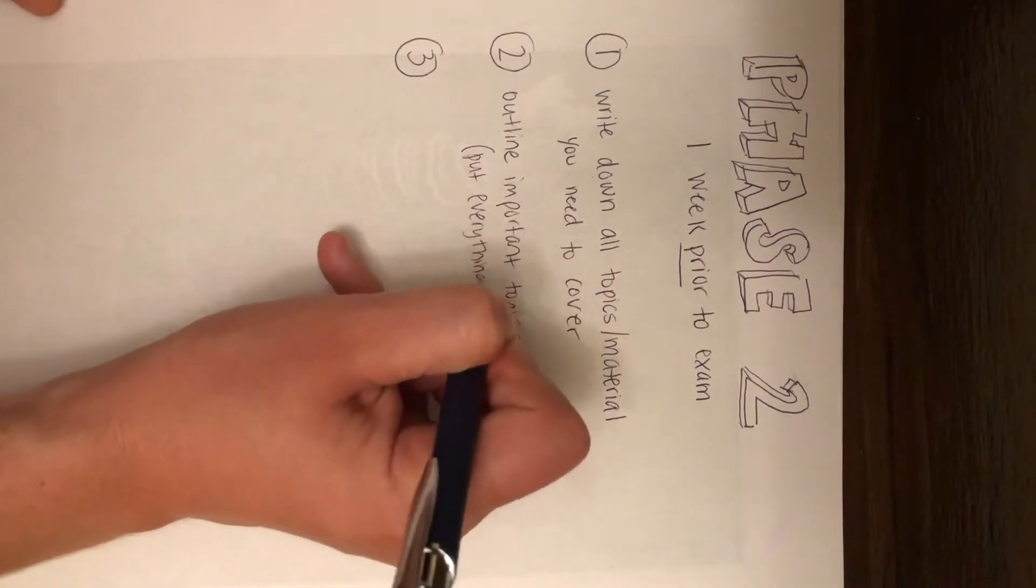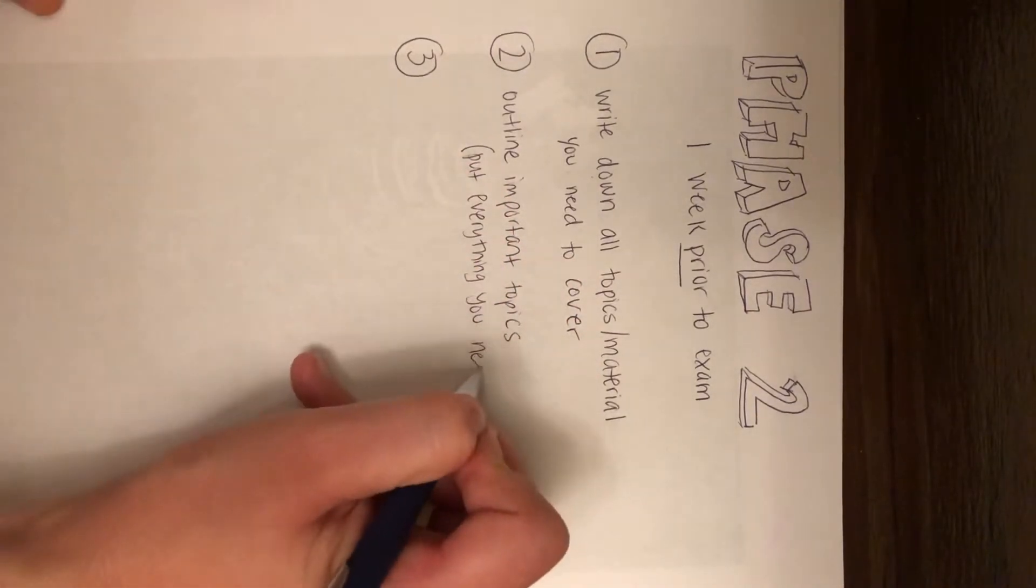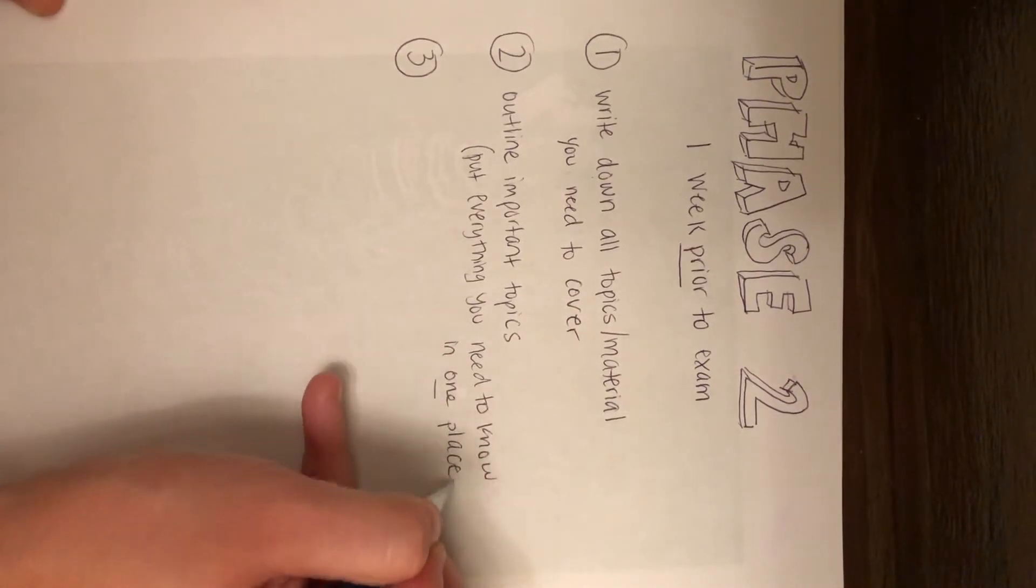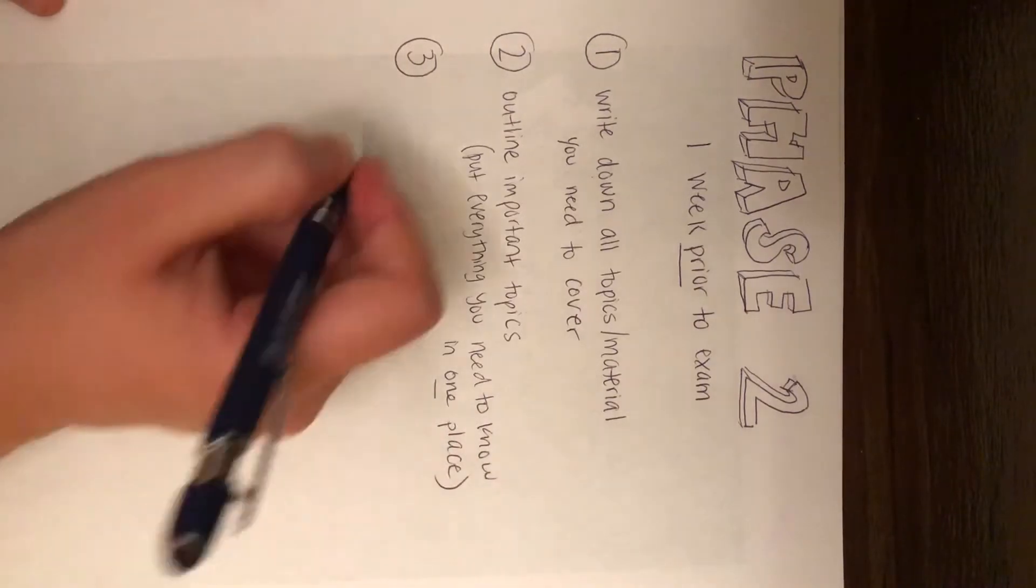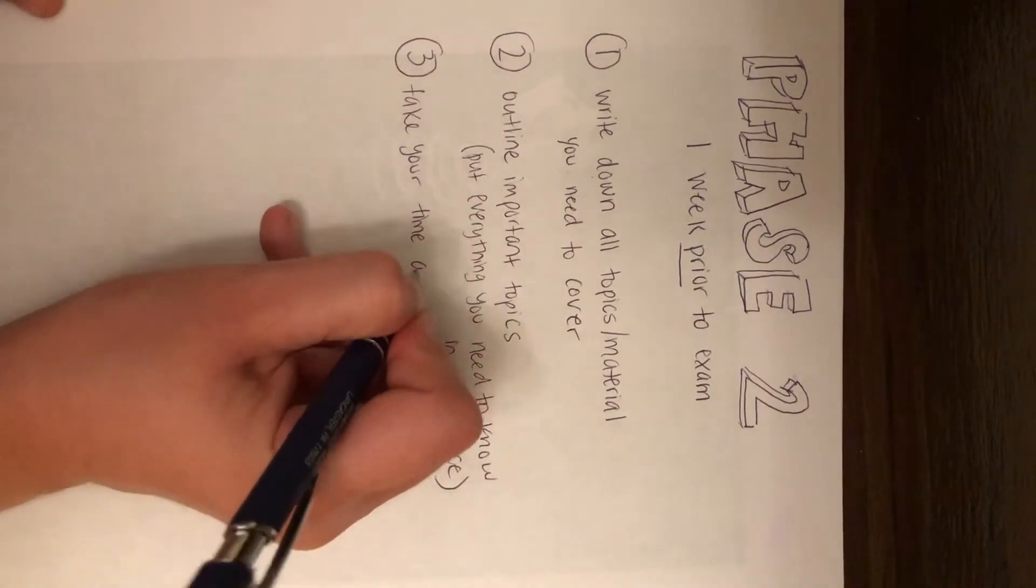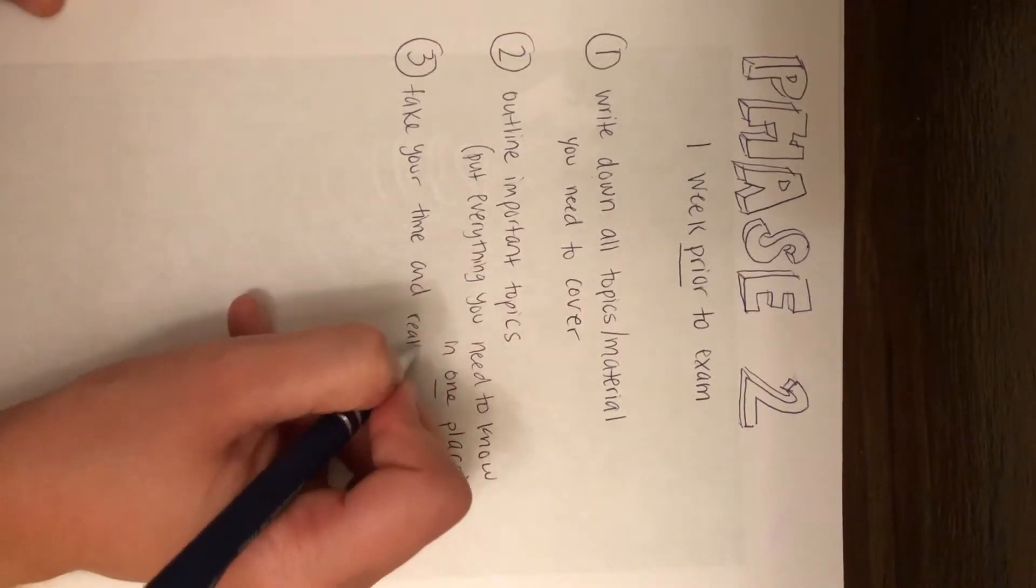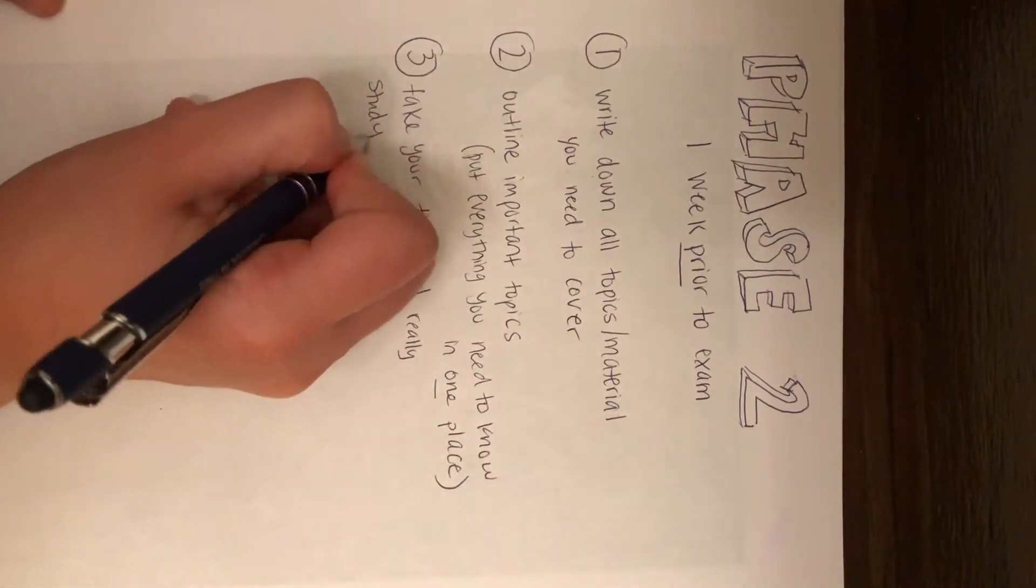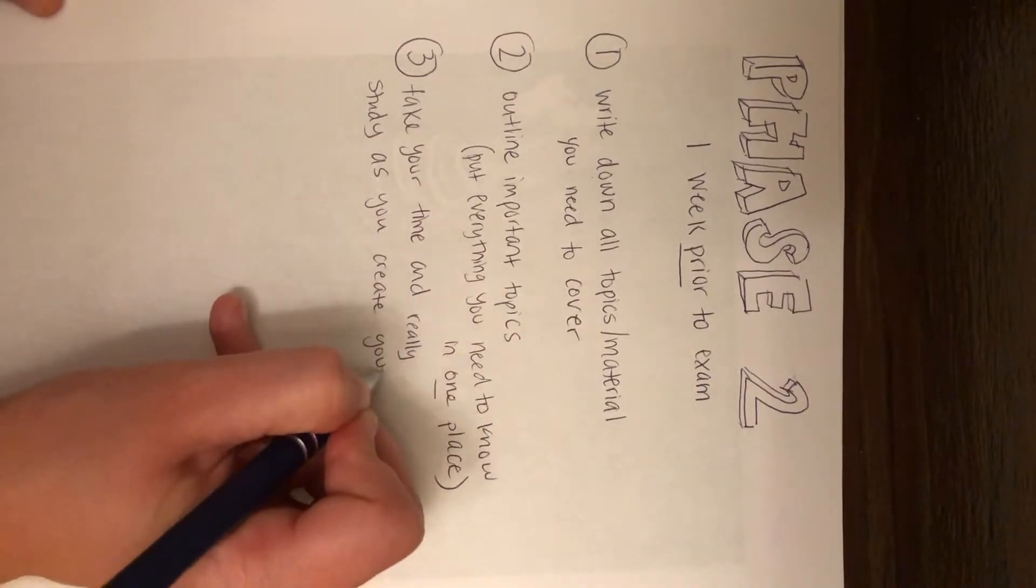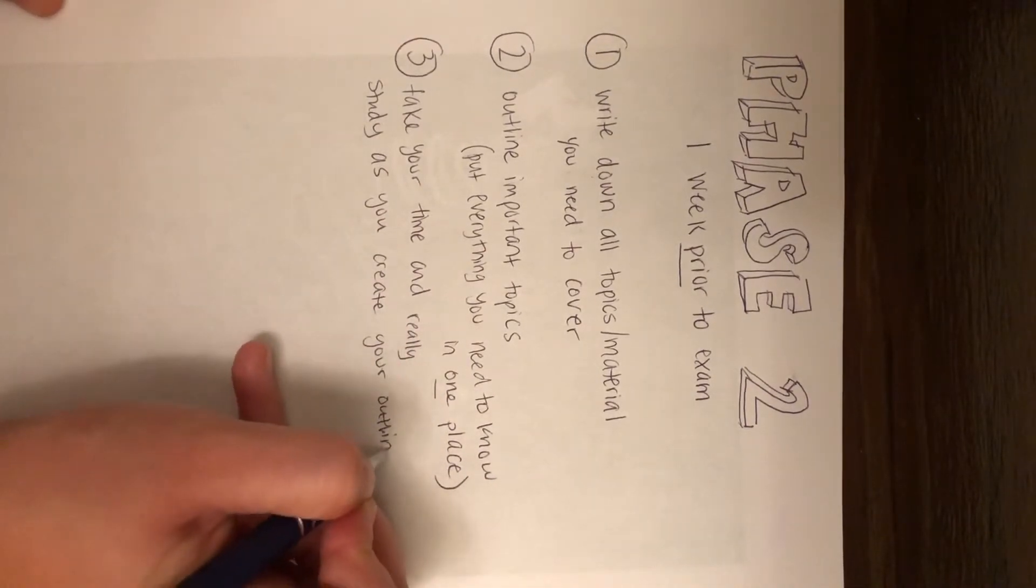So when I'm making an outline I like to gather information from all the resources that we've used like the textbooks, the PowerPoints and any class notes. Once all the information is in one place it's easier to study because you're focusing on just one resource. And last make sure that you're really studying the material and taking your time when you're making this outline because this counts as studying too and it helps the information to stick if you study it as you go.